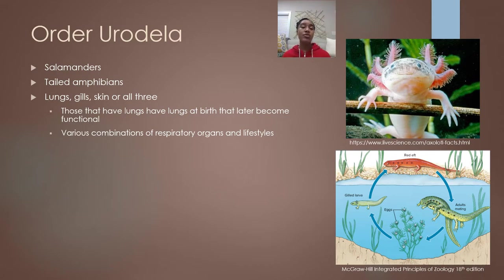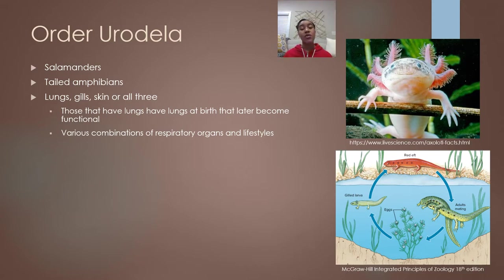For those salamanders that develop lungs, they have lungs at birth, but those lungs are underdeveloped and non-functional when they're born. As the salamander undergoes metamorphosis, their lungs will develop and become functional. By the time they reach adulthood, they'll be able to use their lungs on land.